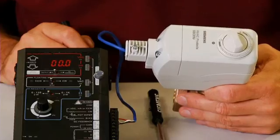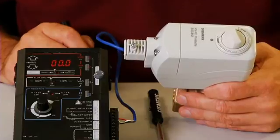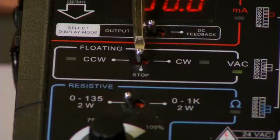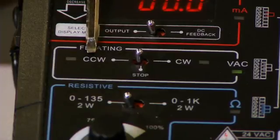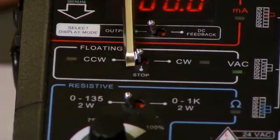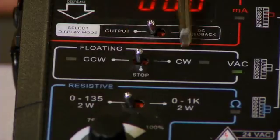In this demonstration, the three position toggle switch on the commissioning tool will act as the relay. There are three positions labeled counterclockwise or CCW, stop or off, and clockwise or CW.